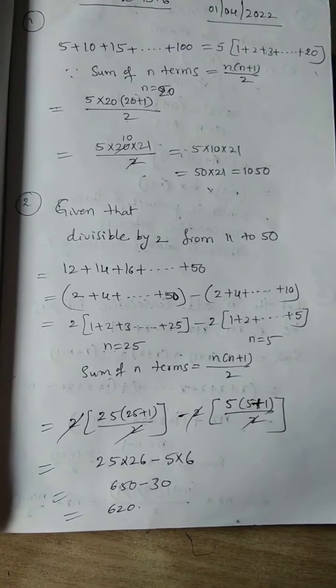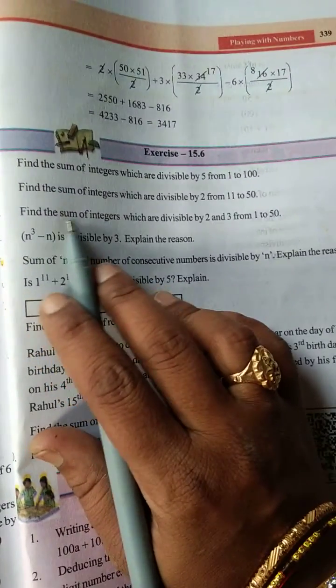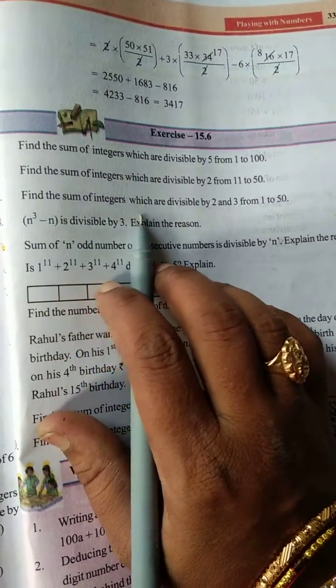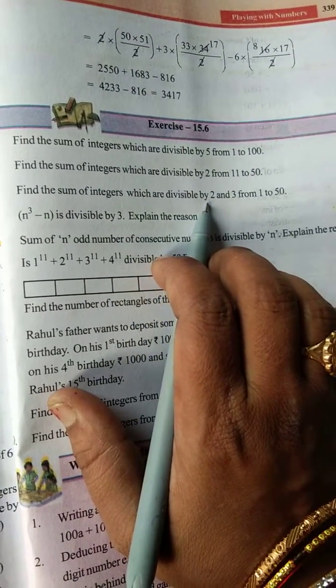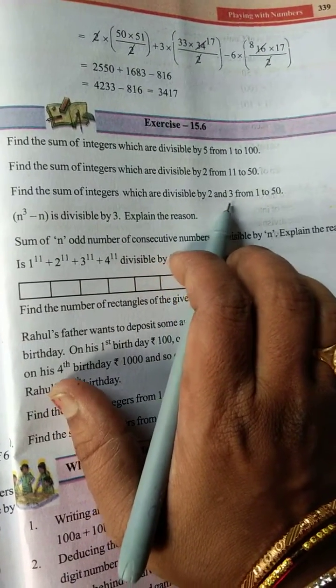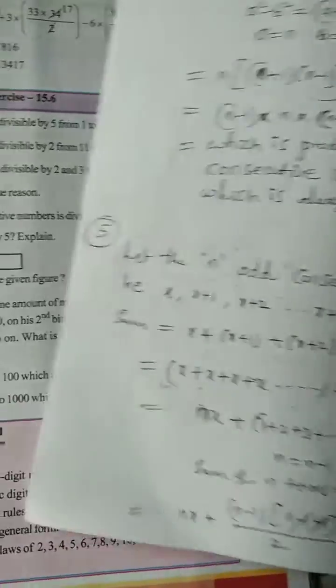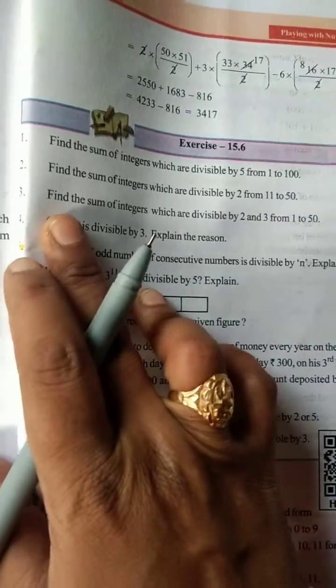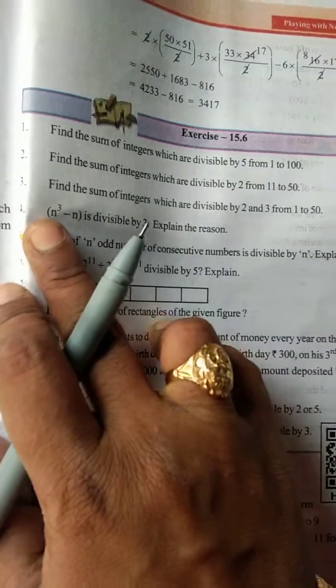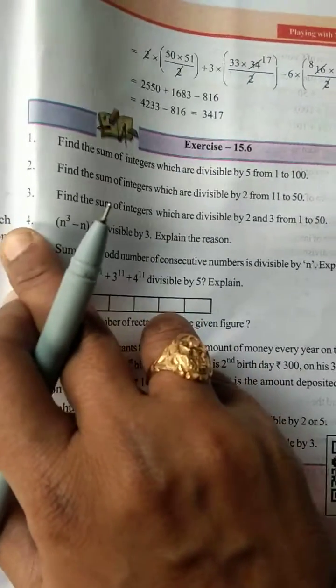Once you can take the screenshot — two questions done. Next, third question: find the sum of integers which are divisible by both 2 and 3 from 1 to 50. I will explain this in the next video.